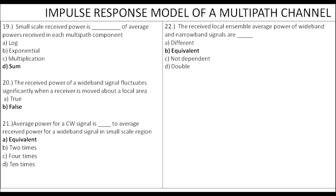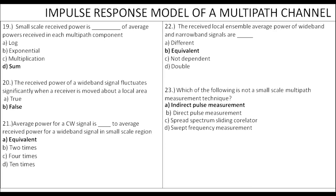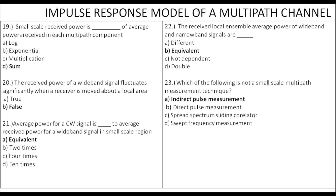Small scale multipath measurement techniques include: direct pulse measurement, spread spectrum, swept frequency, and indirect pulse measurement. Direct pulse systems are not complex — saying they are complex is false; they are simple.